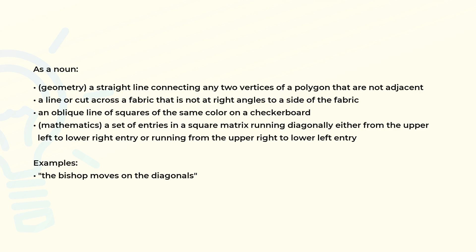Geometry: a straight line connecting any two vertices of a polygon that are not adjacent. A line or cut across a fabric that is not at right angles to a side of the fabric. An oblique line of squares of the same color on a checkerboard.